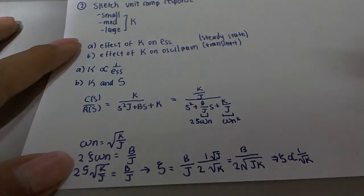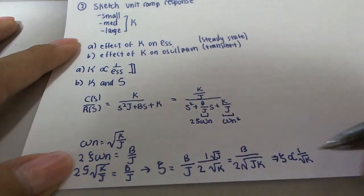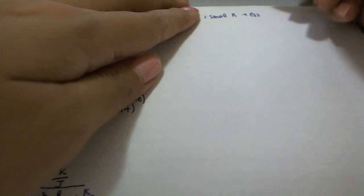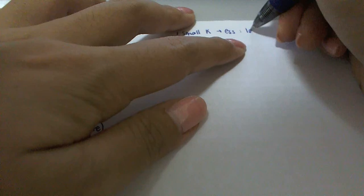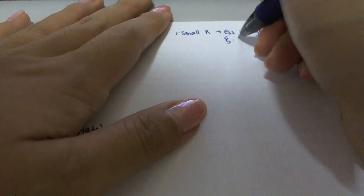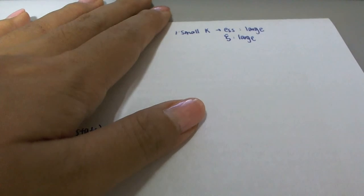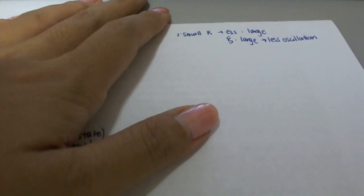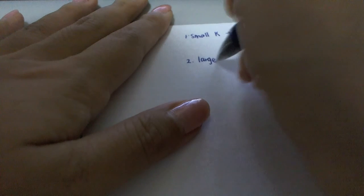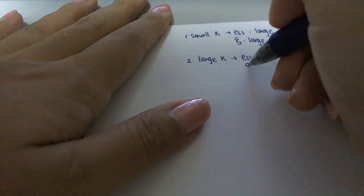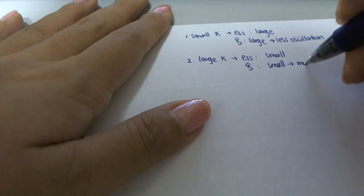We now have both relationships. For small k: ESS is large and zeta is large, meaning more damping and less oscillation. For large k: ESS is small but zeta is small, corresponding to less damping and more oscillation.